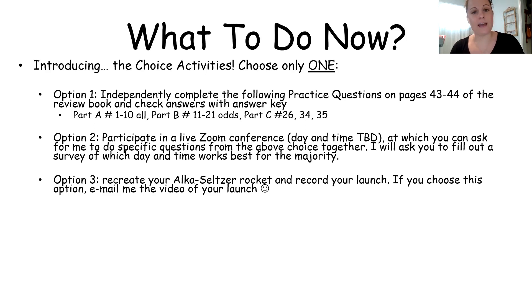In the review book at the end of each topic, as you know from topic one, there's a bunch of Regents practice questions. So one of your options will be to independently complete just the following numbers on pages 43 and 44 of your review book. So independently, you can just choose to do part A numbers one through 10, part B just the odd numbers 11 through 21, and then only three in part C, you can do 26, 34 and 35. So one option is to do all of those on your own and check the answers with the answer key all independently.